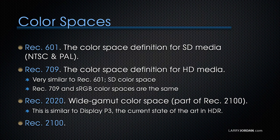REC 601 is the color space for standard definition media — that's both NTSC and PAL. REC 709 is the color space definition for HD media. It's very similar to REC 601, which is the SD color space. And 709 and sRGB color spaces are, by definition, the same.